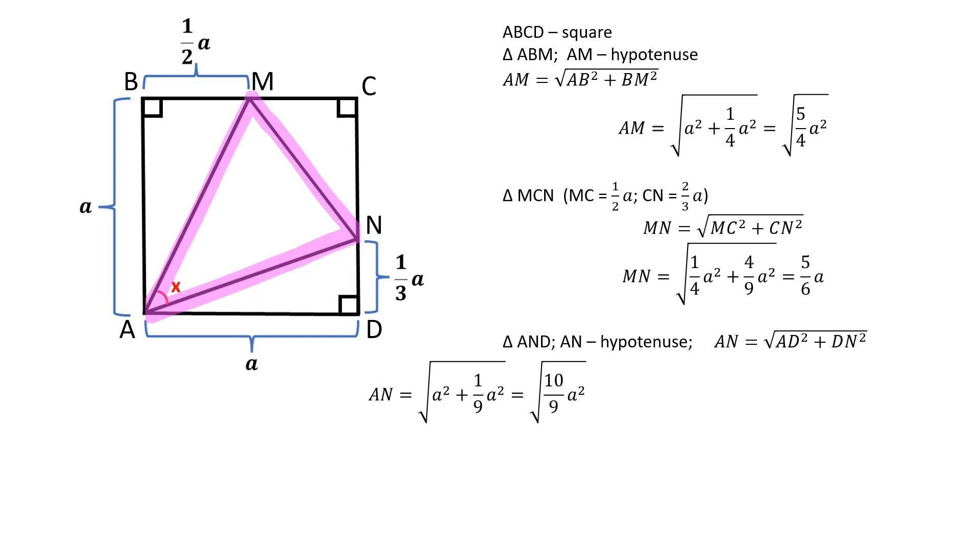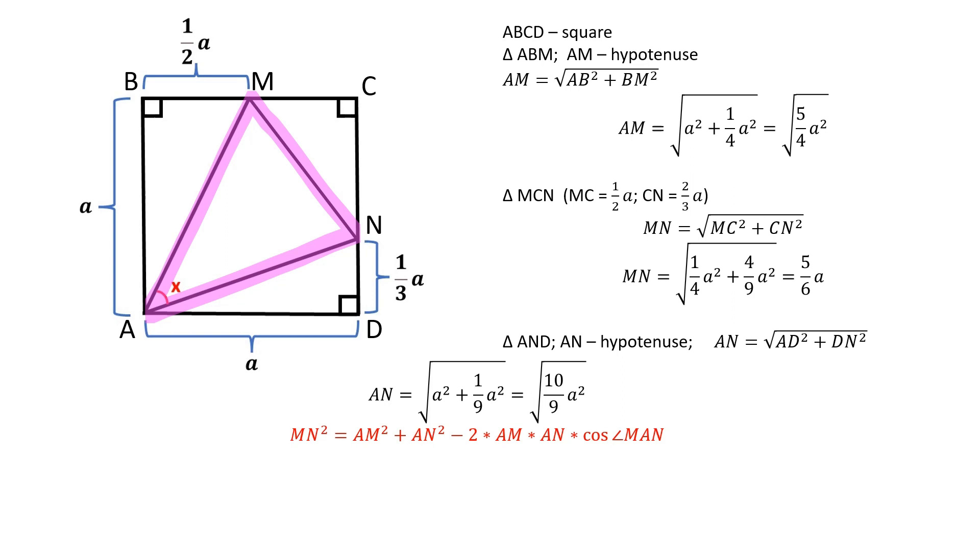Now, since we know all three sides of the triangle AMN, we can find angle MAN by using the cosine rule. Let's substitute in the side length values. And after simplifying the equation, we get that cosine of the angle MAN is equal to square root of 2 over 2.